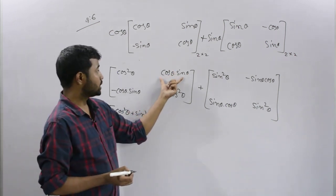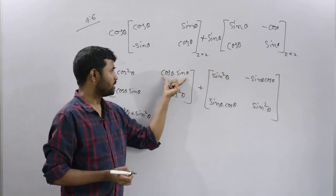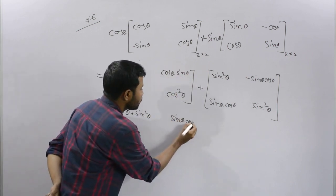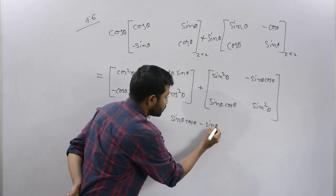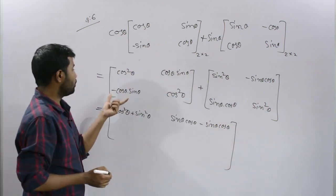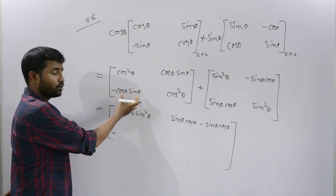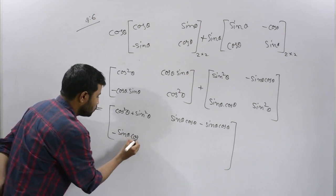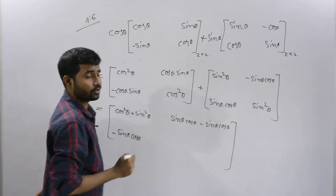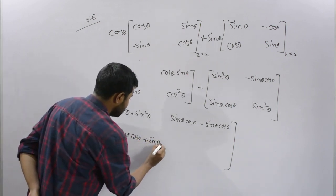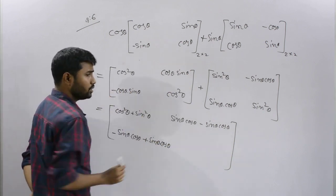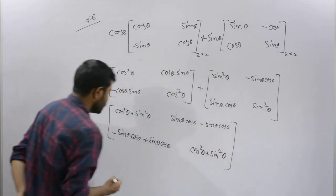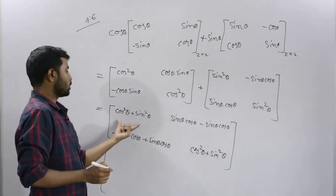For the off-diagonal elements: cos theta sin theta minus sin theta cos theta. By commutative law, cos theta sin theta equals sin theta cos theta, so these terms cancel. Similarly, minus cos theta cos theta plus sin theta cos theta, which simplifies. Cos theta plus sin theta simplifies by trigonometric identity.